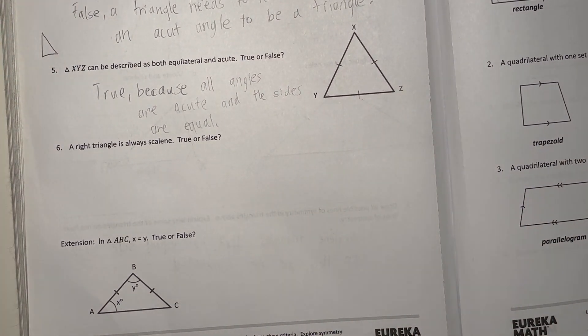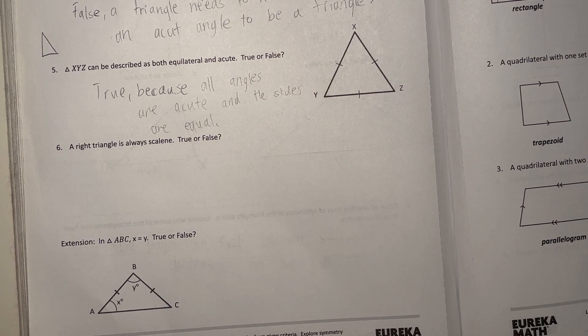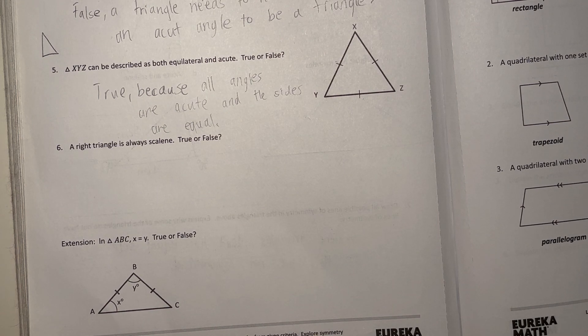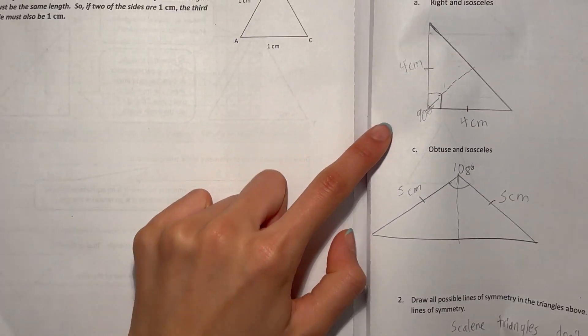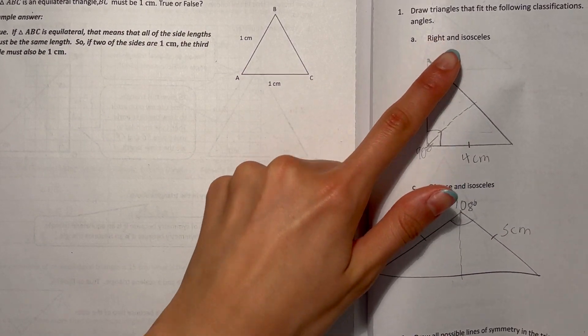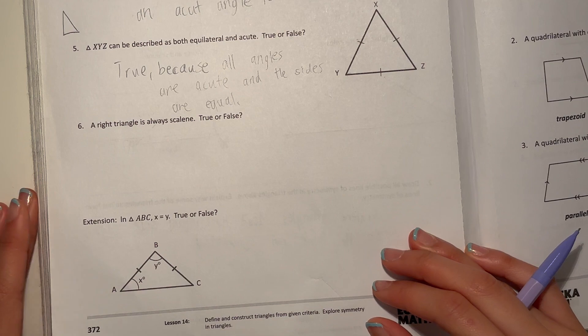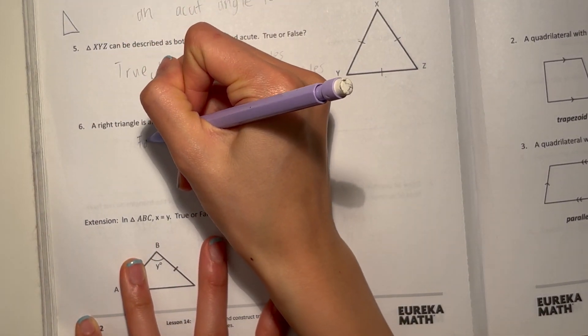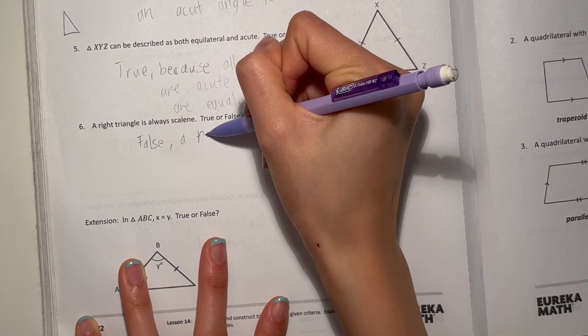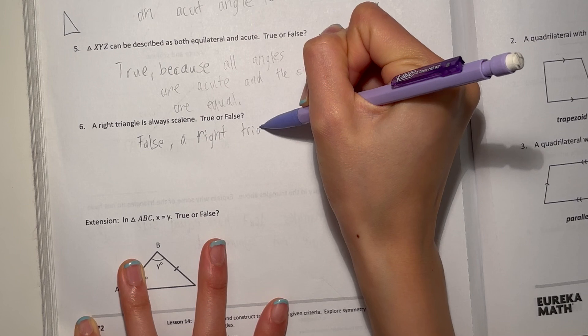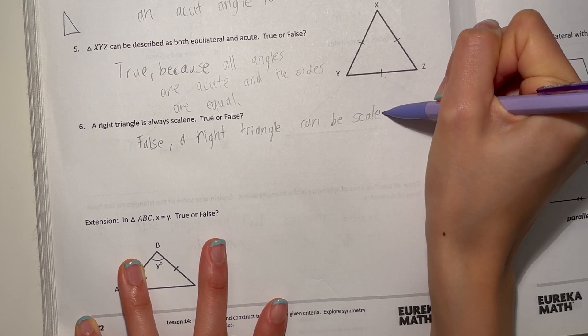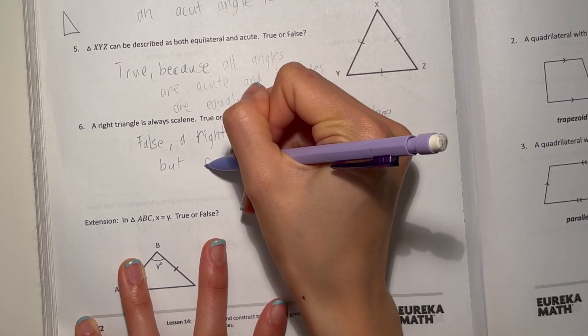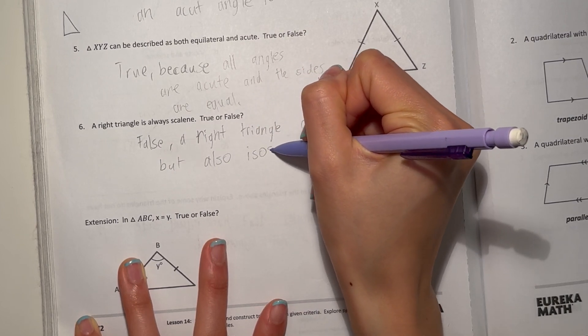Number six says: a right triangle is always scalene, true or false. Scalene means that no side lengths are the same. That's false. It's not always scalene because we drew on the first page a right angle that has a right angle and it's an isosceles triangle. So false. A right triangle can be scalene, but also isosceles.